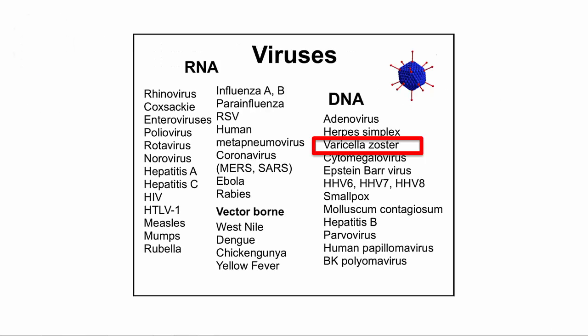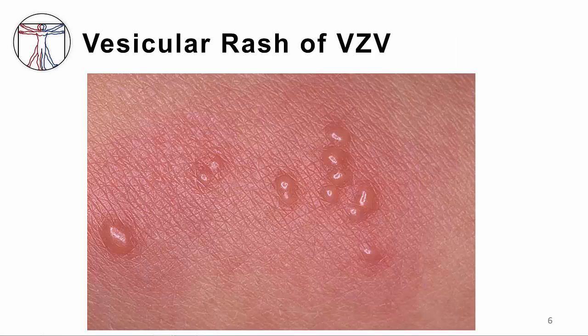This is the course map to help you locate where VZV fits in. Remember this rash — if your patient develops a rash with blisters, which is also called a vesicular rash, we want you to recognize this rash quickly and accurately.